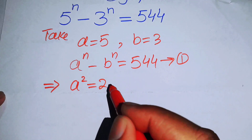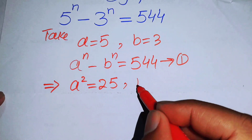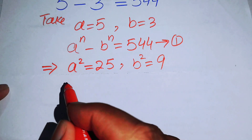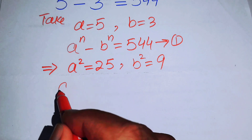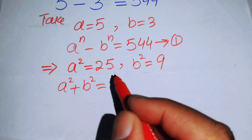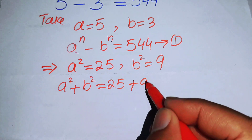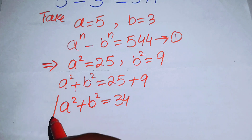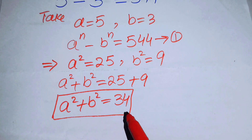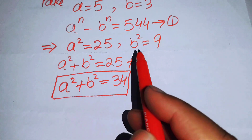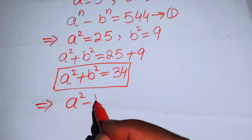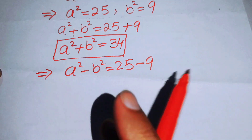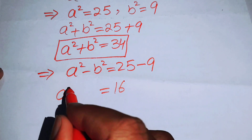Next, we square both values: a² equals 25 and b² equals 9. Adding these gives a² plus b² equals 25 plus 9, which equals 34. Subtracting gives a² minus b² equals 25 minus 9, which equals 16.